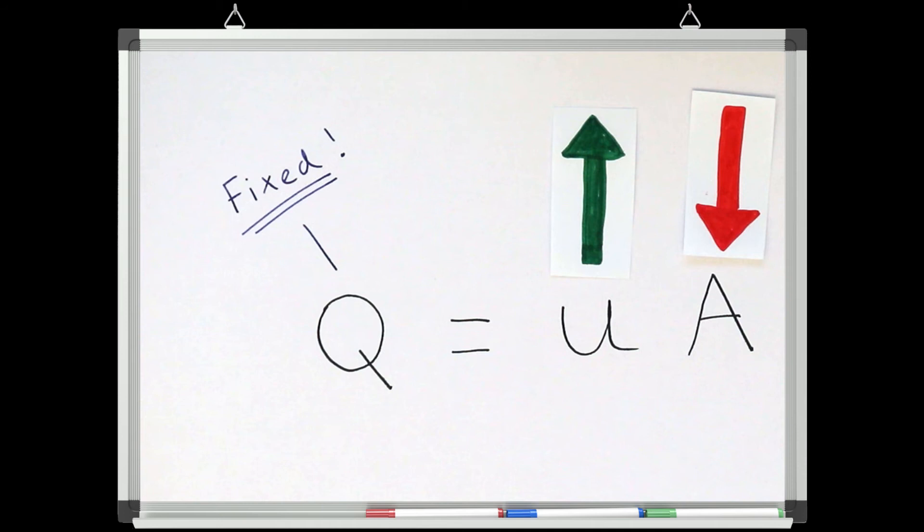Now we have the basic tools to understand what is going on in the flume across the different examples I showed earlier. The discharge is always the same, but if I force the velocity or the cross-sectional area to change, this will have an effect on the other parameter. As one goes up, the other goes down.